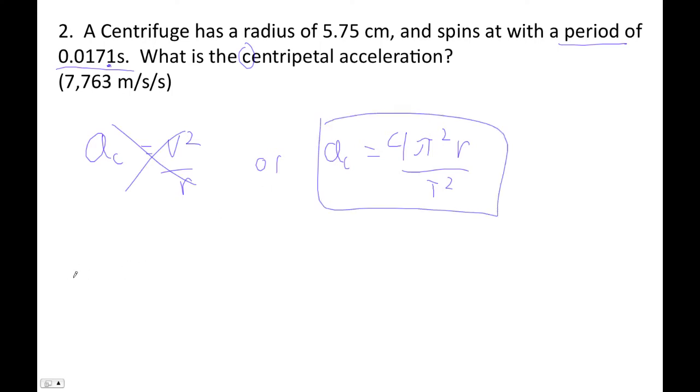So let's just plug in our numbers. Centripetal acceleration is 4 pi squared times our radius. 5.75 centimeters is 0.0575. So that is, divide by 100 to do that.